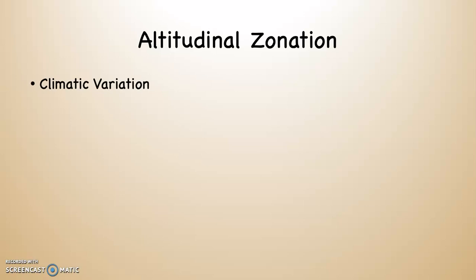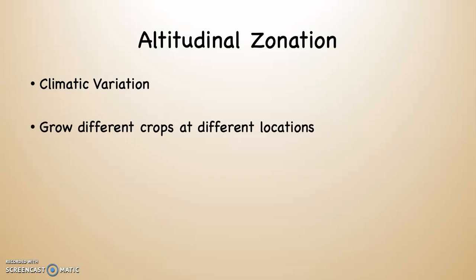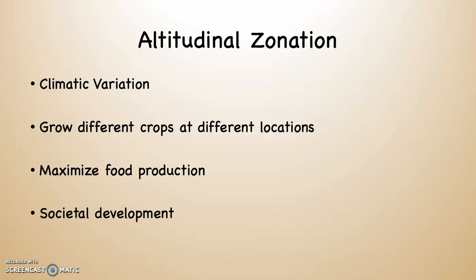What altitudinal zonation does is provide climatic variation. The ancient people who lived in the Andes figured this out and began to grow different crops at different elevations and locations, because every crop is not suited to every kind of climate. As they did that, they began to maximize food production, and as throughout human history when people maximize food production, societal development begins to happen — and this is exactly what happened in the Andes.